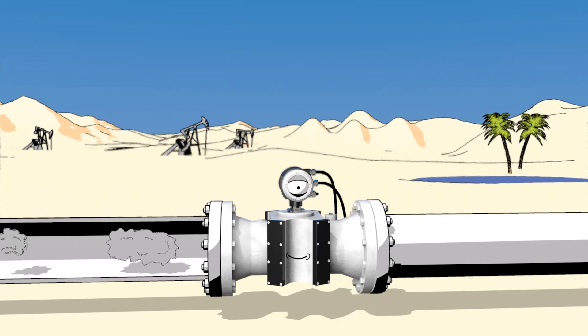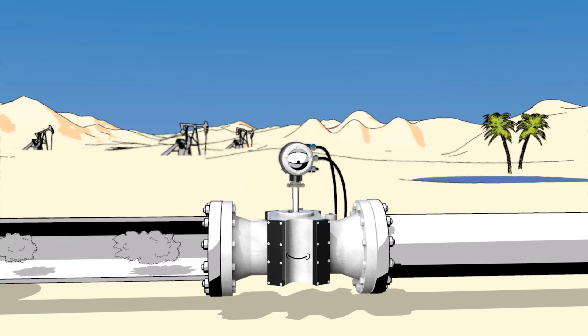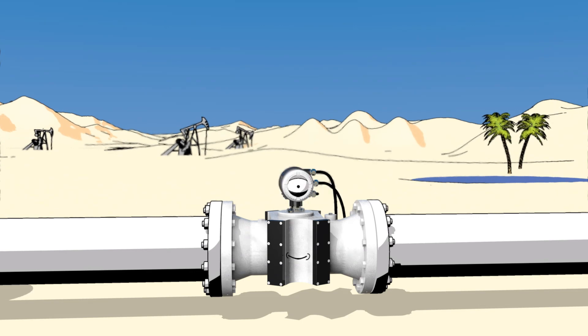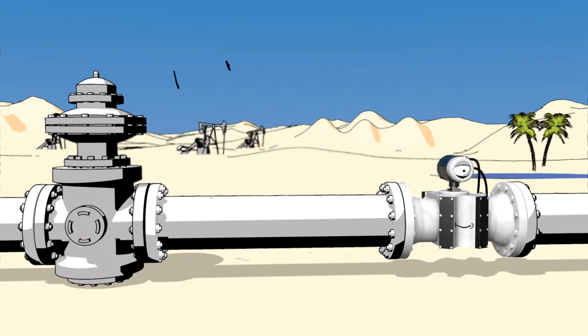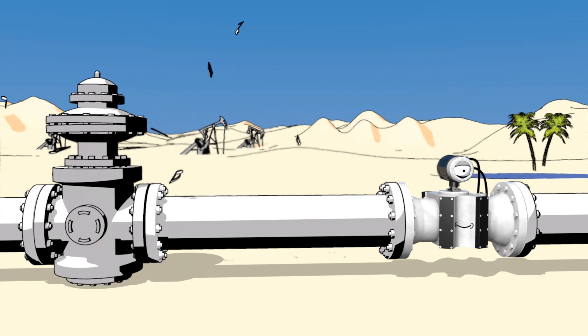Even when contaminants are present or gas falls below dew point to make liquids, reliable measurement continues with no ifs and buts. Even noise disturbance from a pressure regulator does not influence the measurement. Measurement continues accurately.